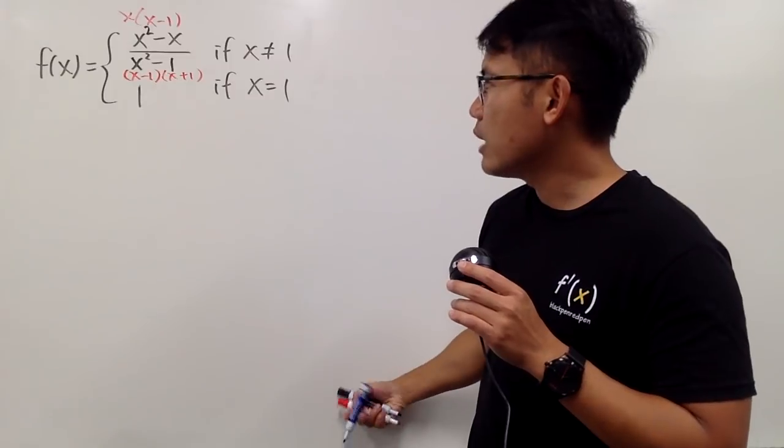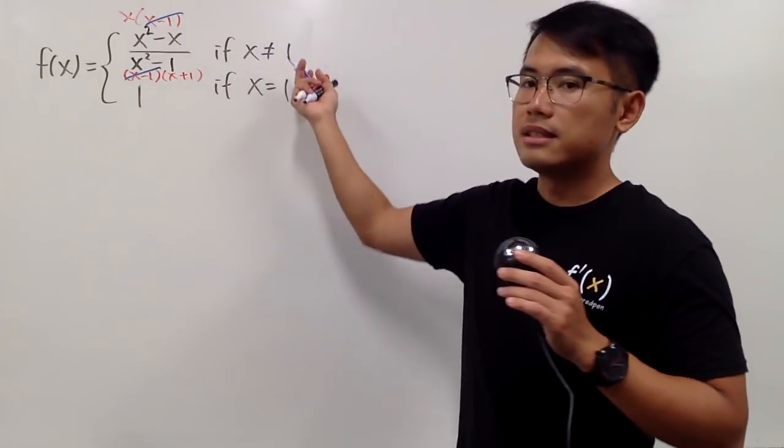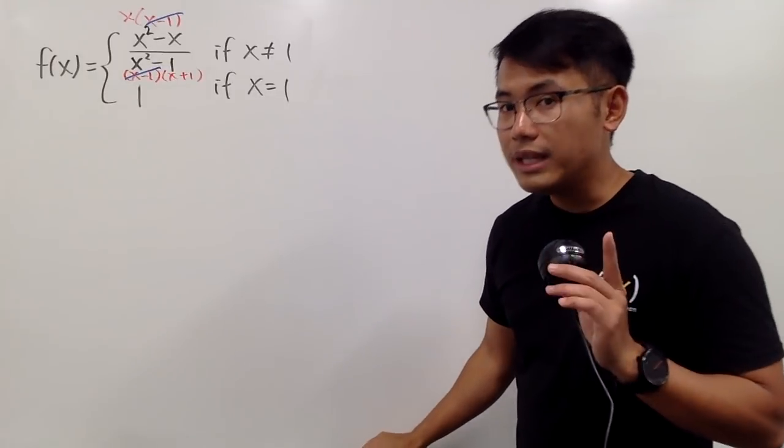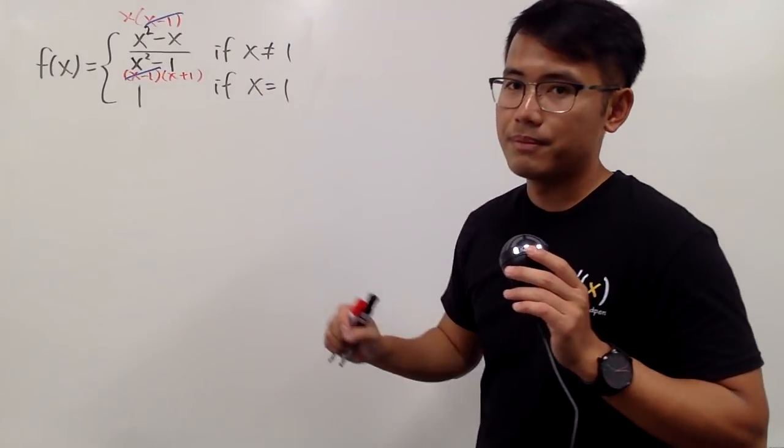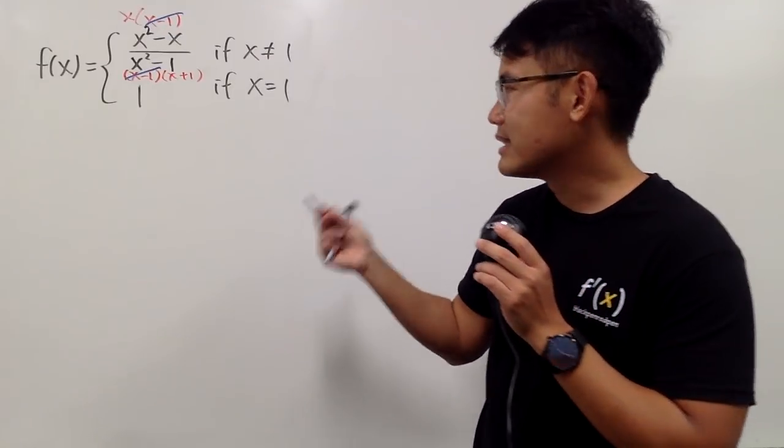And then, of course, we can cancel out the x minus 1, because we are saying x is not equal to 1. You really have to pay attention to this condition. We will actually end up with an open circle when x is 1, but that's it.